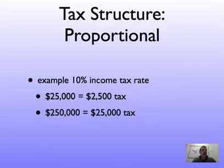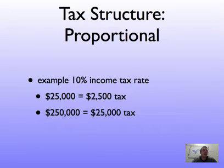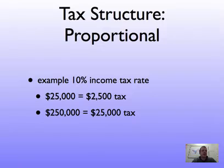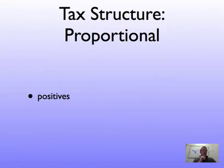Here's an example. If we have a 10% income tax rate and it is a Proportional Tax, or a Flat Tax, then everybody pays 10% of their income. Somebody who makes $25,000 a year would pay $2,500 in taxes — that's 10% of their income. Somebody who makes $250,000 a year would pay $25,000 in taxes — that's 10% of their income. One of the main benefits of a Proportional Tax Structure is that it is very simple and very easy to collect. It doesn't cost a lot of money to calculate, collect, or check. Everybody pays the same rate.